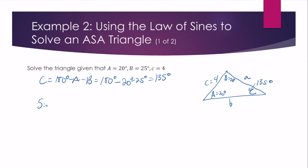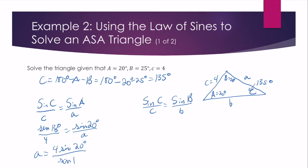Sine of C over c is the same as sine of A over a. And sine of C over c is the same as sine of B over b. So let's solve for a first. I get that sine of 135 degrees over c, which is 4, equals sine of A, which is 20 degrees over a. We solve and find a is 4 sine 20 degrees over the sine of 135 degrees, and that's about 1.93. So I've found the length of side a.